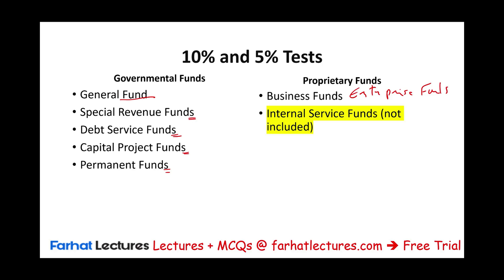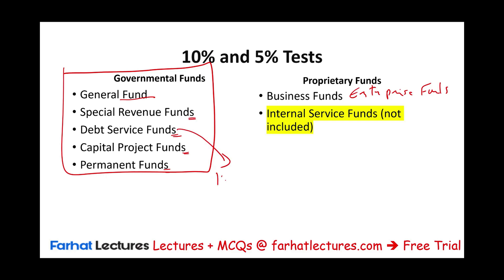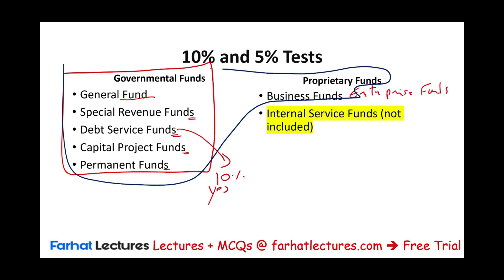The first thing we determine is: if we are looking at a governmental fund, does that particular fund represent 10% of the total revenue of all governmental funds? If yes, we go to step two. In step two, we look at the governmental fund and the enterprise fund combined. We do not include the internal service fund. Then in the second test, we see if the revenue of that fund represents 5% of those two combined.